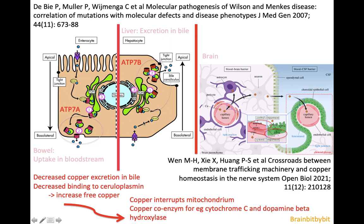Copper is also a coenzyme for ceruloplasmin. It binds to ceruloplasmin, so if there's decreased binding to ceruloplasmin there's also an increase in free copper, and the copper level in the body goes up. There is then uptake in the brain, especially in the putamen and globus pallidus, and this copper disrupts the mitochondria. It is a coenzyme for, for example, cytochrome C and dopamine beta-hydroxylase.